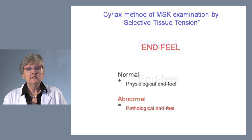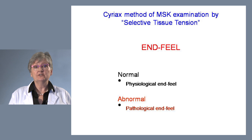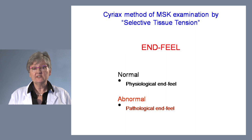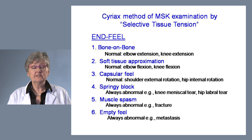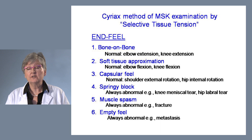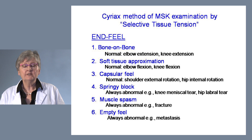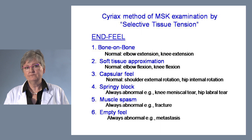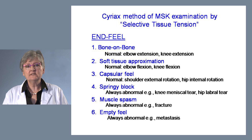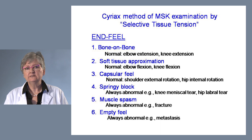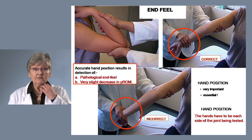Concept three: end feel. End feel describes what limits the end of normal range of motion — physiological end feel. Elbow flexion is limited by soft tissue approximation; elbow extension by bone on bone. Cyriax describes six types: bone on bone (normal at elbow and knee extension); soft tissue approximation (normal at elbow and knee flexion); capsular feel (normal at shoulder external rotation and hip internal rotation); springy block (always abnormal — seen with hip labral tears and knee meniscal tears); muscle spasm end feel (always abnormal — seen with fractures); and empty feel (always abnormal — associated with metastasis).